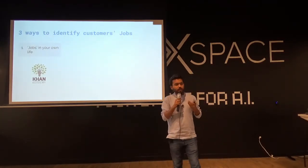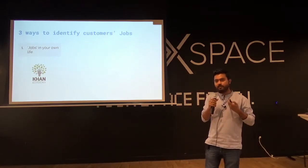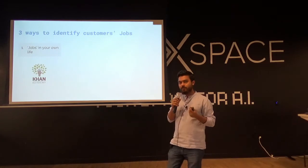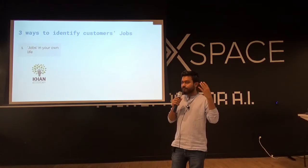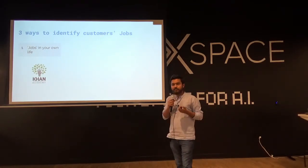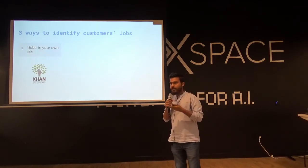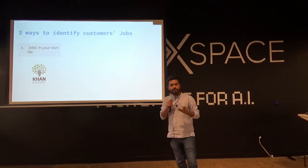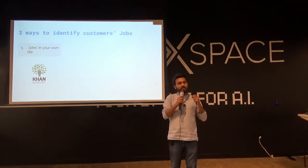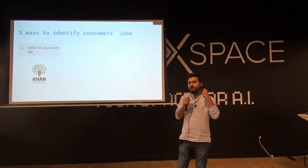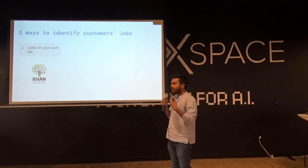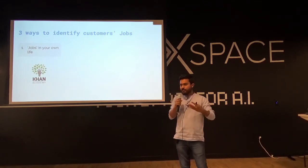The first way is to look for jobs in your own life — look for needs and problems in your own life and you'll be able to figure out something that still hasn't been solved. One cool example is Khan Academy. The way Khan Academy started was that Sal Khan, the founder, wanted to create videos to teach his niece difficult math concepts. His niece always had problems with math and loved lessons from Sal Khan. Because he couldn't be in touch with her on a regular basis, he started creating some scrappy videos. Over time, he saw that a lot of people started sharing those YouTube videos.